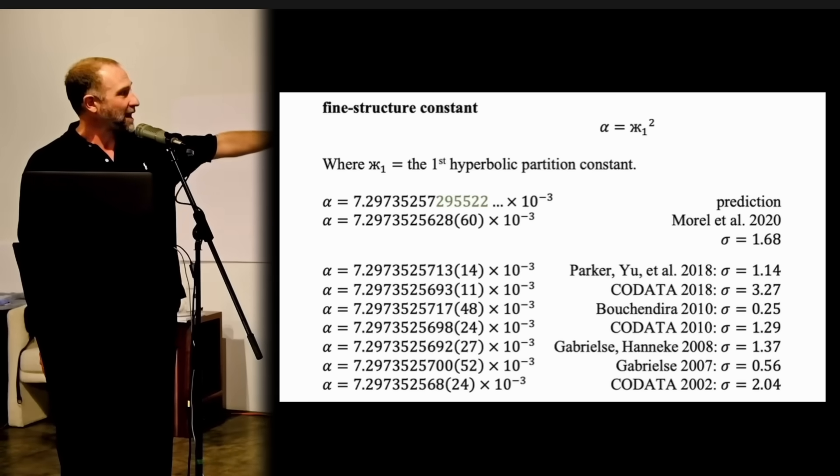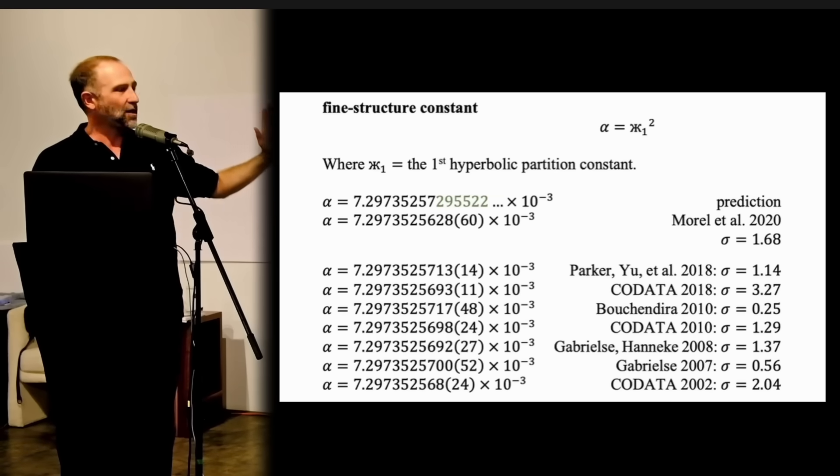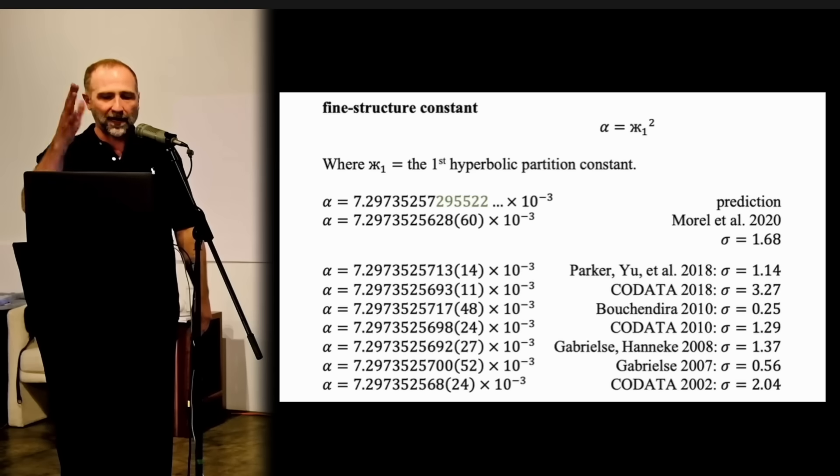But in each case, notice that they have several digits they all agree on. So the error bars tell you where our ignorance is, but we certainly know this thing to 1, 2, 3, 4, 5, 6, 7, 8, 9, 10, 11, and with error on the last two. So we have nine confident digits and two not-so-confident digits.